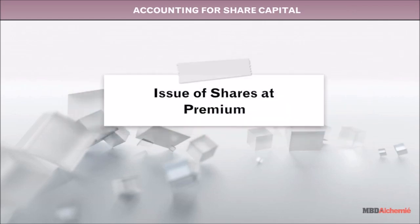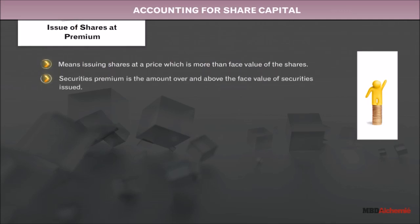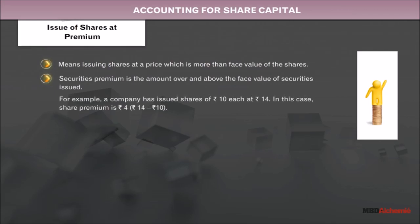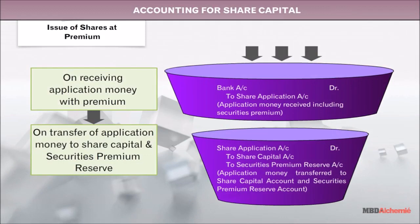Issue of Shares at Premium means issuing shares at a price which is more than the face value of the shares. Securities Premium is the amount over and above the face value of securities issued. For example, a company has issued shares of 10 Rupees each at 14 Rupees. In this case, Share Premium is 4 Rupees (14 Rupees minus 10 Rupees). Journal Entries for Issue of Shares at Premium are also provided.